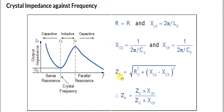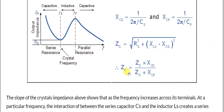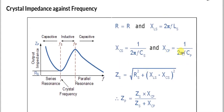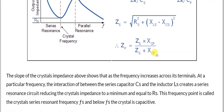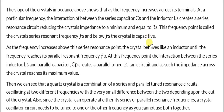The magnitude of the series branch impedance Zs is given by: Zs = √(Rs² + (XL − XC)²). The parallel branch impedance Zp is the parallel combination of Zs and Xcp: Zp = (Zs × Xcp) / (Zs + Xcp), where Xcp is the reactance of the parallel plate capacitance Cp.